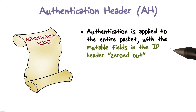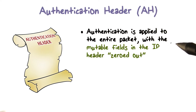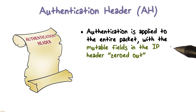There are several fields in the IP header, for example, Time to Live, or TTL, that may change in transmission. The values of these fields are not included, or zeroed out, when the message authentication code is computed.